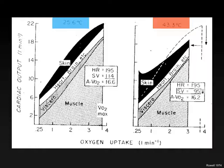During exercise, muscle sets the demand. Muscle sets the demand means the intensity dictates ventilation, the intensity dictates heart rate, the intensity dictates blood flow. Muscle sets the demand.